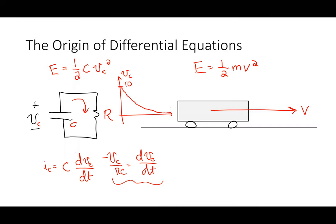When does the rate of change of voltage happen faster — when the voltage is high or when it's low? When the voltage is high. So let's say V sub C started out at 10 volts. There's no source of energy, so it better eventually go to zero. Somehow it must magically equal the exponential function. The exponential function is actually pretty natural — the rate of change has to be highest initially, and the rate drops as the voltage drops.